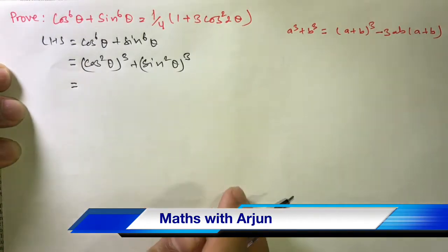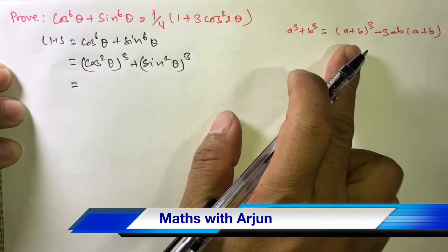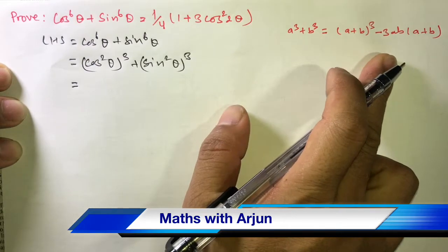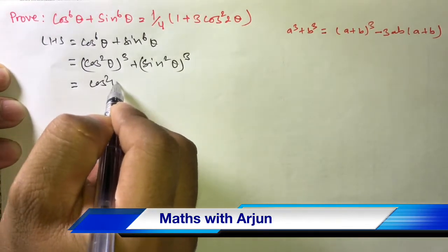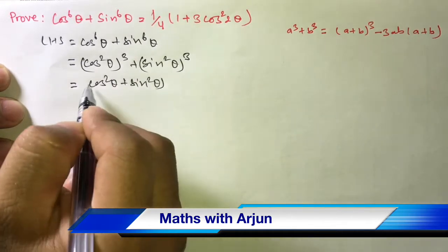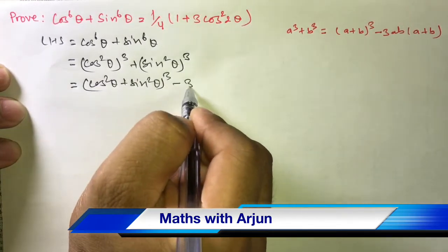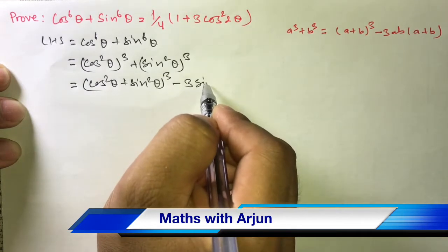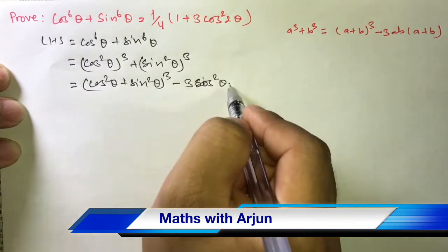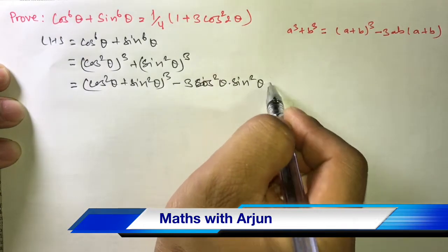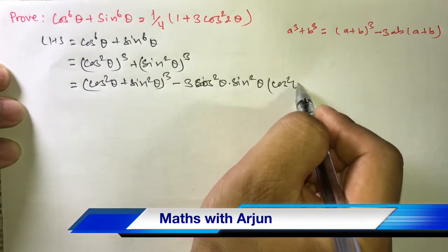Now we have the formula a³ + b³ = (a + b)³ - 3ab(a + b). Then (cos²θ + sin²θ)³ - 3a, where a equals cos²θ, b equals sin²θ, bracket a + b: cos²θ + sin²θ.